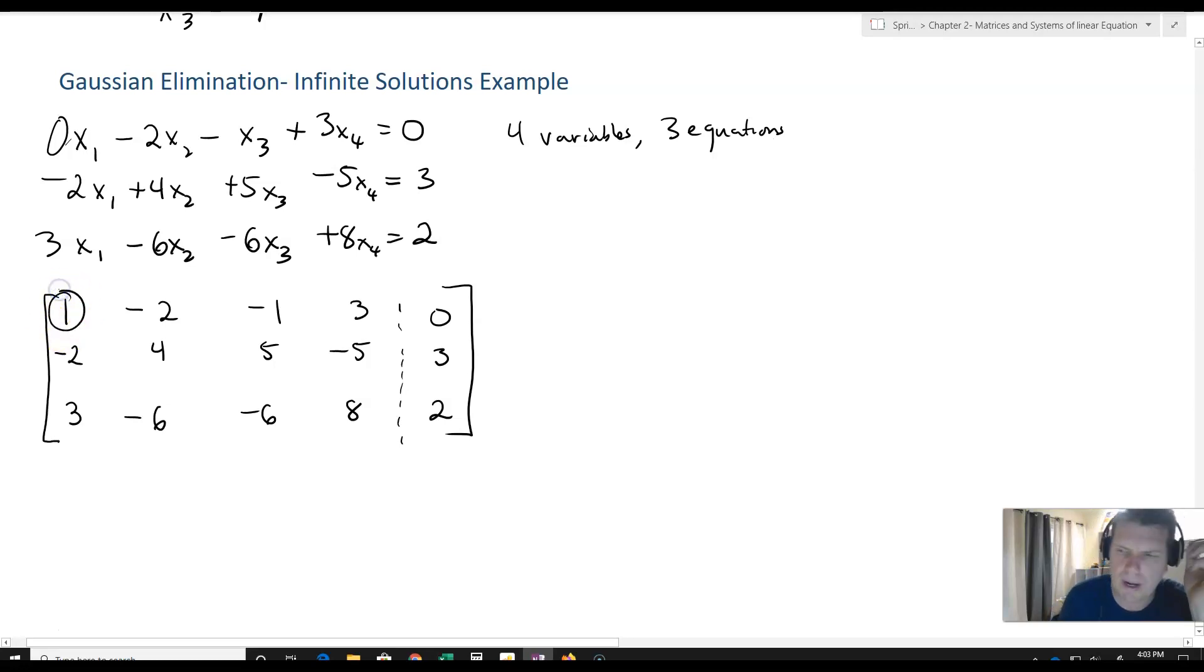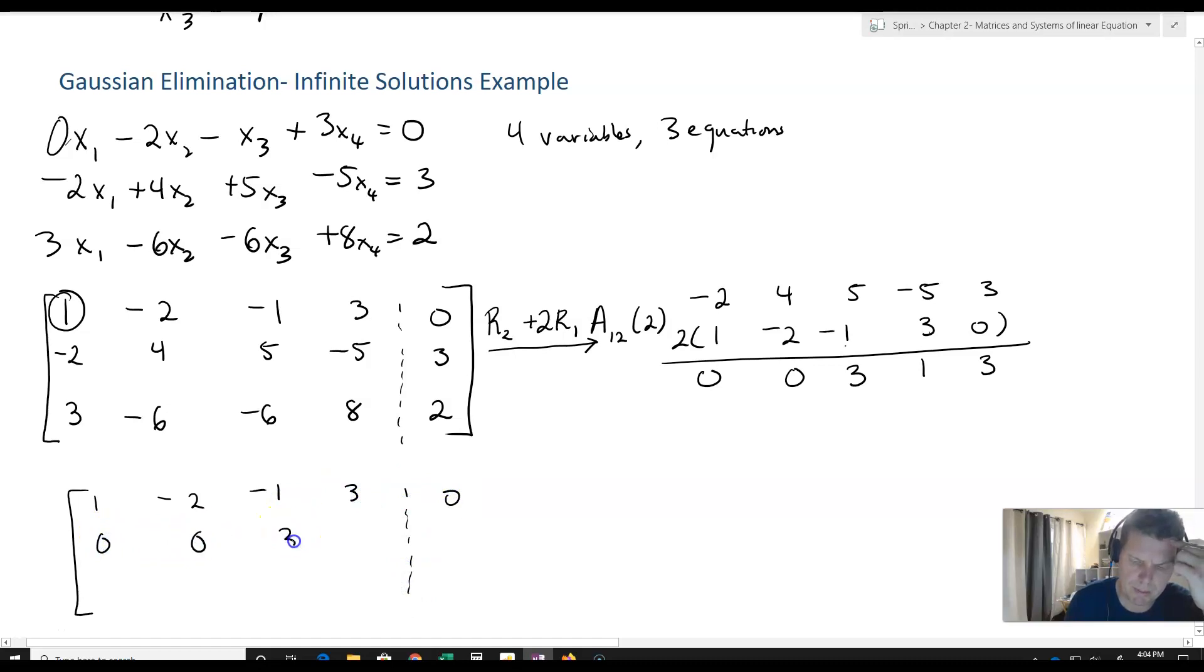The first thing we want to do in Gaussian elimination is get a leading 1 in the top left position, and we already have one. Next, I'll take row 2 and add 2 times row 1. So -2, 4, 5, -5, 3 plus 2 times (1, -2, -1, 3, 0) gives me 0, 0, 3, 1, 3. My new matrix is [1, -2, -1, 3, 0; 0, 0, 3, 1, 3; 3, -6, -6, 8, 2].